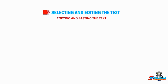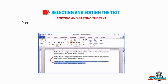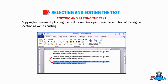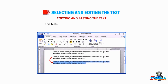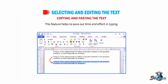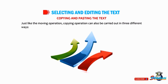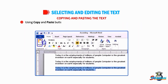Copying and pasting text: copying text means duplicating the text by keeping a particular piece of text at its original location as well as pasting it at another location. This feature helps to save our time and effort in typing. Just like the moving operation, copying operation can also be carried out in three different ways.